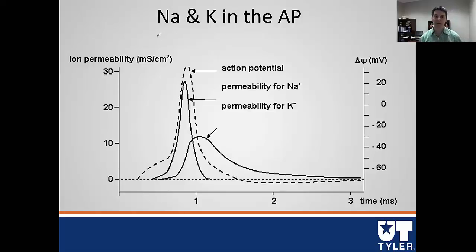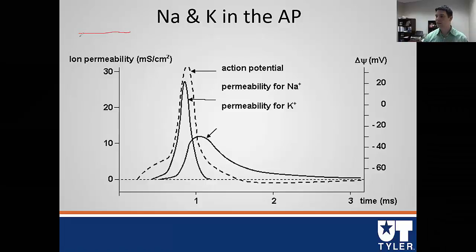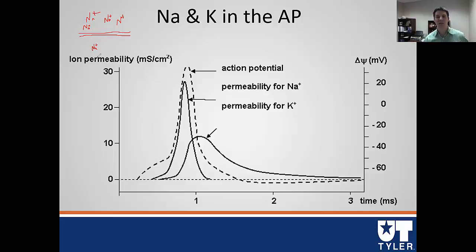The resting membrane potential of a nerve is set up such that sodium is located primarily outside of the cell. There is a large concentration of sodium outside, and given concentration gradients, its tendency is to get inside the cell as much as it can. However, the cell membrane is completely impermeable at rest. There is a relatively small number of sodium ions inside the cell.